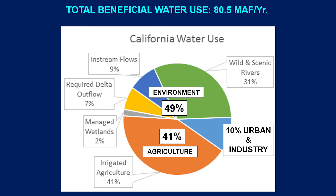First of all, let's look at the status of water resources in California on an average year like 2010. When we put together both the precipitation and the import from the transboundary river, we have about 200 million acre feet per year.